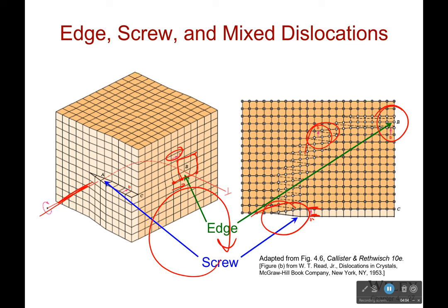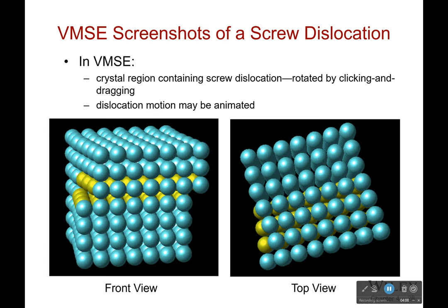Here is a screenshot of a screw dislocation from a program — it gives a more 3D rendition. You can see how this plane of atoms got pushed backwards over here and over here. There is the Burgers vector: if I was spiraling around, I would end right here, and the Burgers vector would fix that and bring me back to where I began.